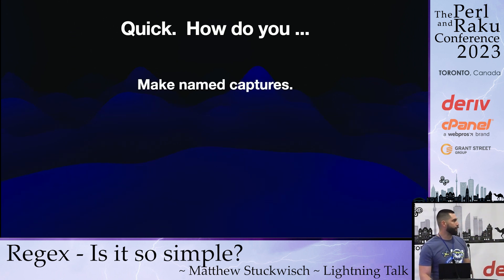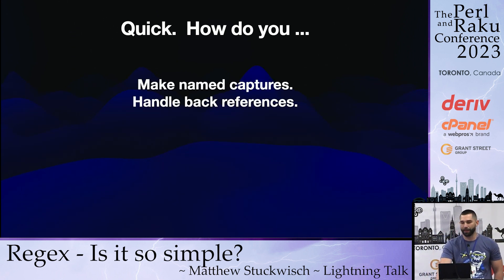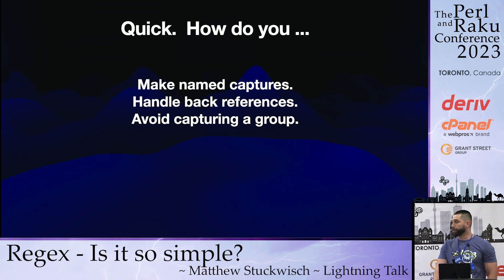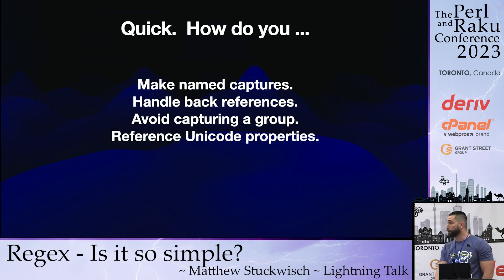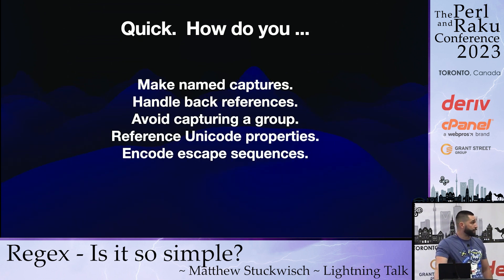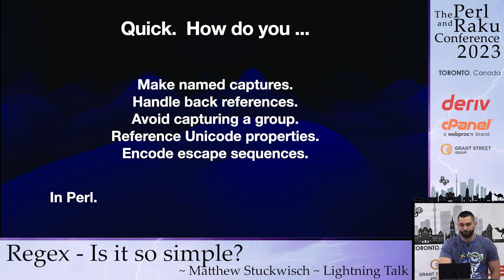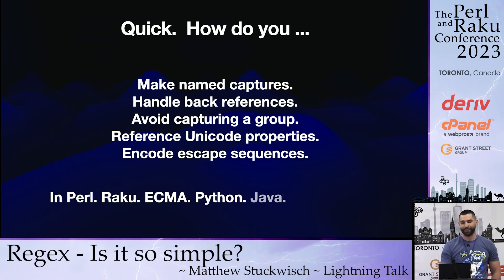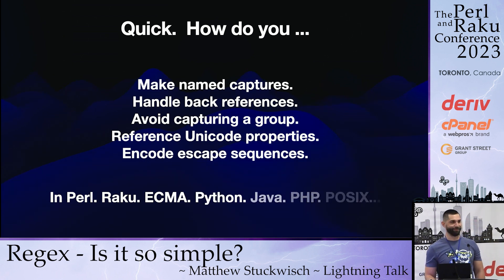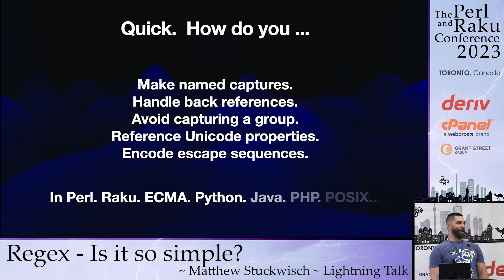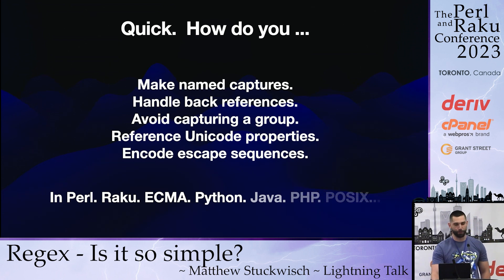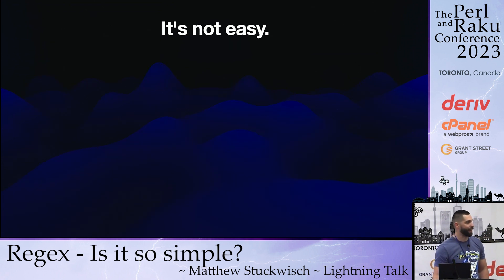How do you do any of these? Make named captures, handle back references, avoid capturing in a group, reference unicode properties, and encode escape sequences. Most of y'all probably know how to do this, but can you do it in Perl, Raku, ECMA, Python, Java, PHP, POSIX? They don't all work the same way, and it's very frustrating when you have to switch between them. It's just not easy.